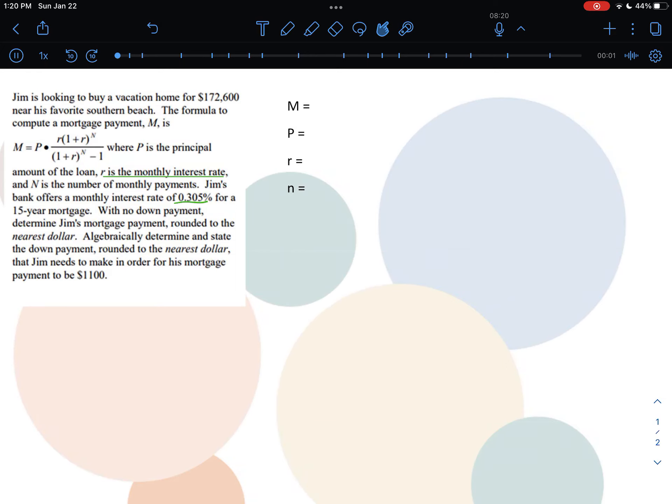This is an Algebra 2 Regents quick question walkthrough on mortgage payments. Mortgage payments are usually on the Regents, and it is not one of the formulas you have to memorize or include. They normally give it to you within the problem itself. I've included the letters off to the side myself just to organize the data that they give me so I'm sure that I have all the variables that I need and the values for them to put into the equation.